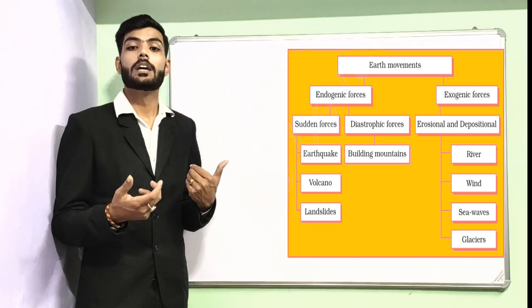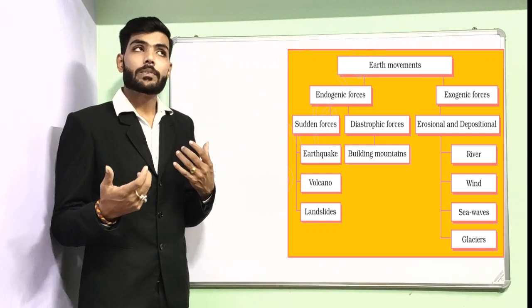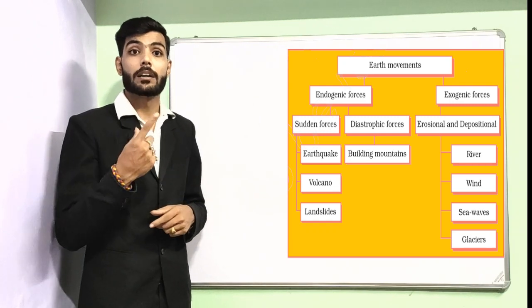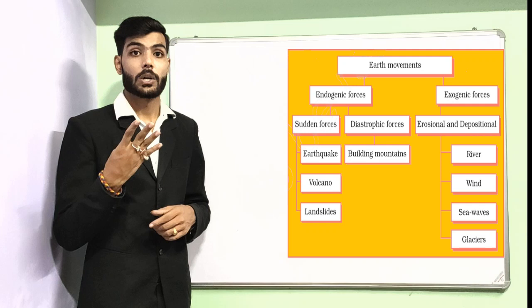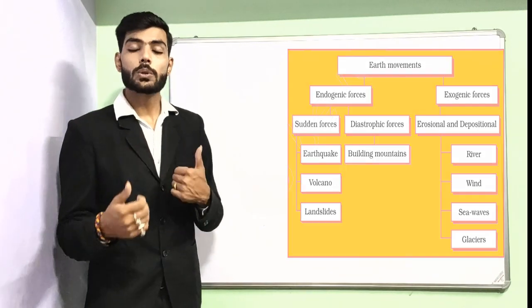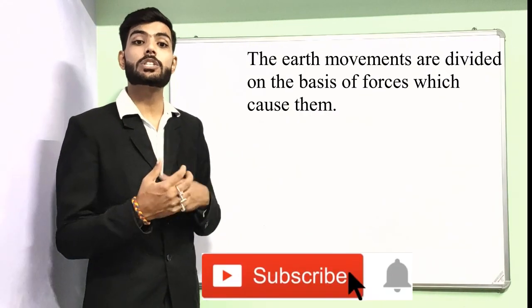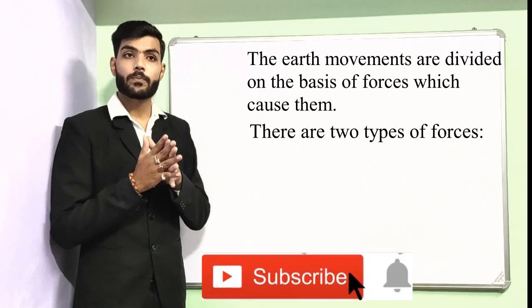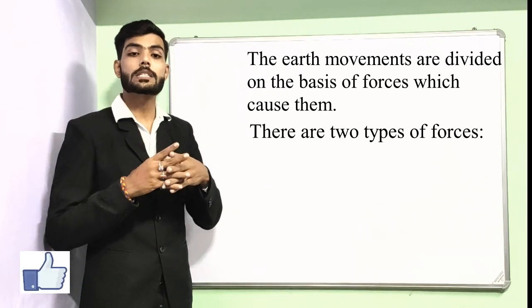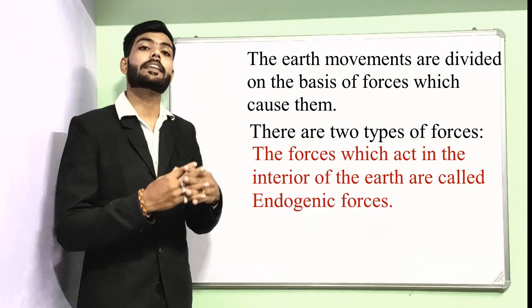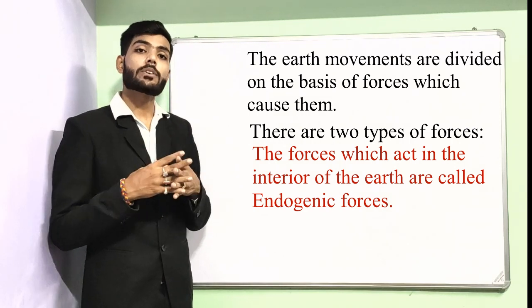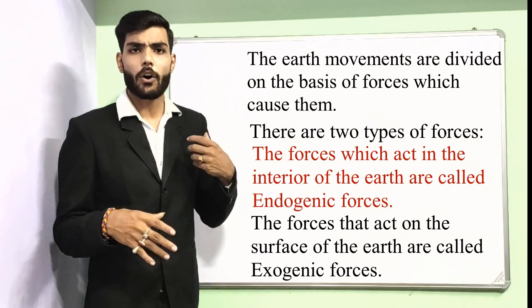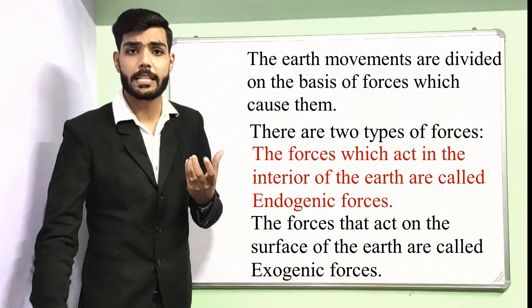Erosional and depositional work are done by four agents: river, wind, sea waves, and glaciers. The endogenic forces act in the interior of the earth, whereas the exogenic forces act on the surface of the earth — quite clear from the names themselves.